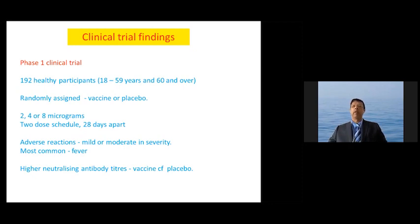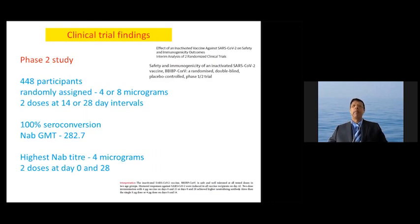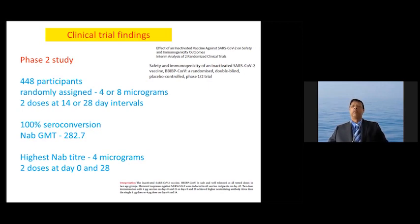The readout from the Phase I trial was a high neutralizing antibody titer in those who received the vaccine compared to placebo, and the neutralizing antibody is important as immune protection. The Phase II trial included 448 participants given 4 or 8 micrograms as two doses, 14 or 28 days apart. There was 100% seroconversion, and the neutralizing antibody geometric mean titer was 282.7. The highest neutralizing antibody titer came from the 4 microgram formulation given on day 0 and day 28, and this was taken forward to the Phase III trial.